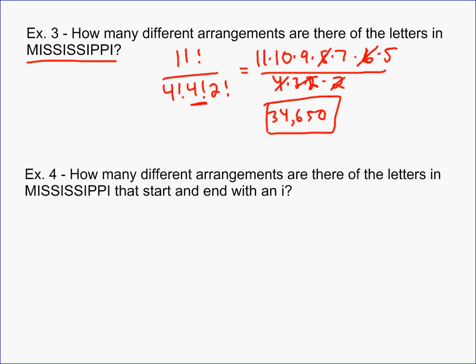Example four is a very similar problem except that it has some restrictions on what this word can look like. And that is it has to begin and end with an I. Well, if that's the case, what we could actually do is just pull out two of the I's, put them as the first and the last letter, and then consider what we have inside. What we have inside is there are nine letters left. So we're going to do 9 factorial. There are still four S's, so we've got to do 4 factorial. Instead of there being four I's, I've taken two of those I's and I've put them in the first and the last spot. And so I've only got two I's left, so I've got to do 2 factorial for that, and then also 2 factorial for my P's.